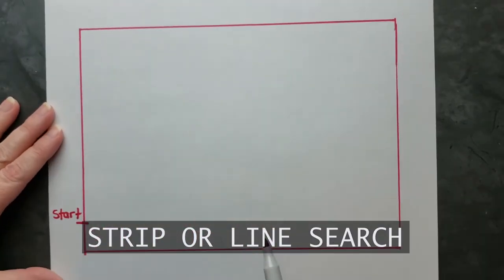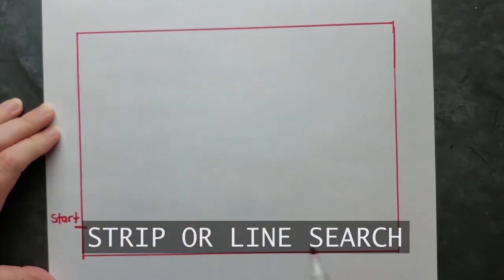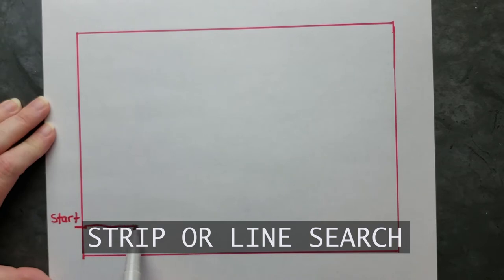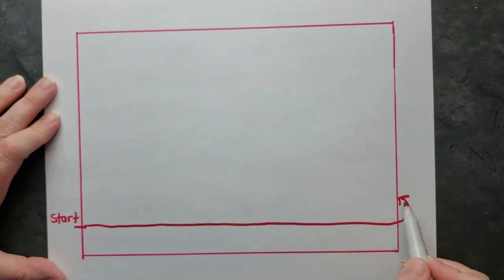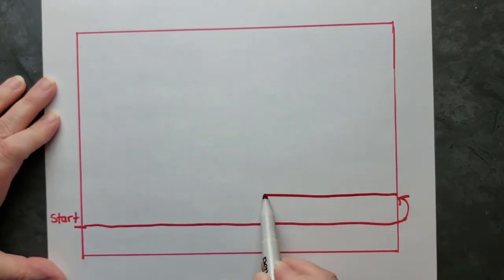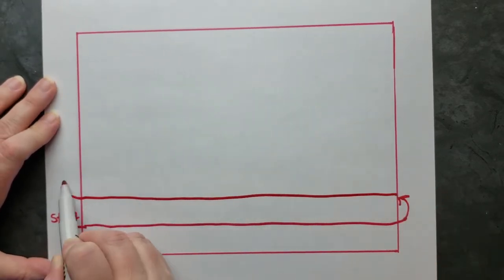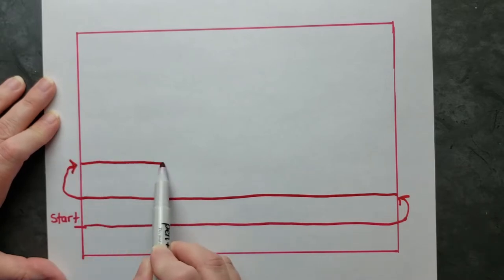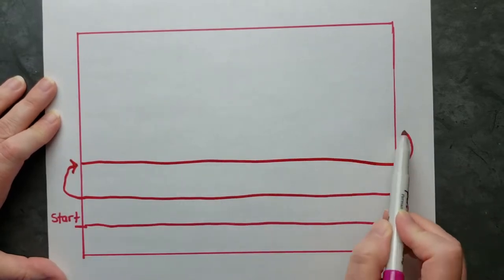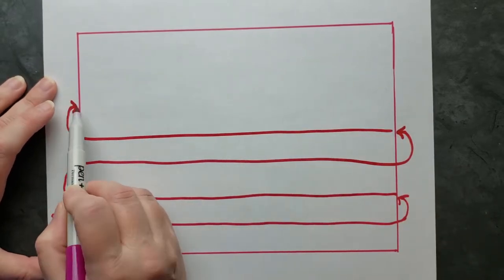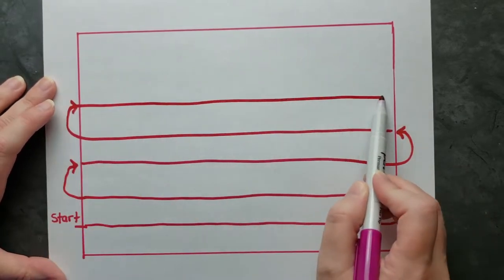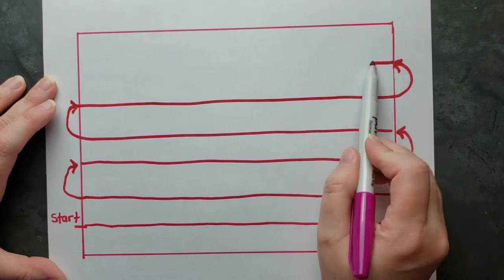The strip search pattern reminds me of getting into a line — the one that has those velvet barriers that kind of corral you like cattle. That is what you would use if you're doing the search alone.